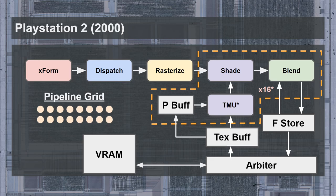Similar to the Voodoo 5 GPU, all 16 pixels were rendered in lockstep, in two rows of 8 pixels. This means that in the case of triangle edges, it is possible that not every pipeline will output a color, resulting in the parallel pipelines being underutilized. This was, and still is, a common problem with parallel pixel rendering.